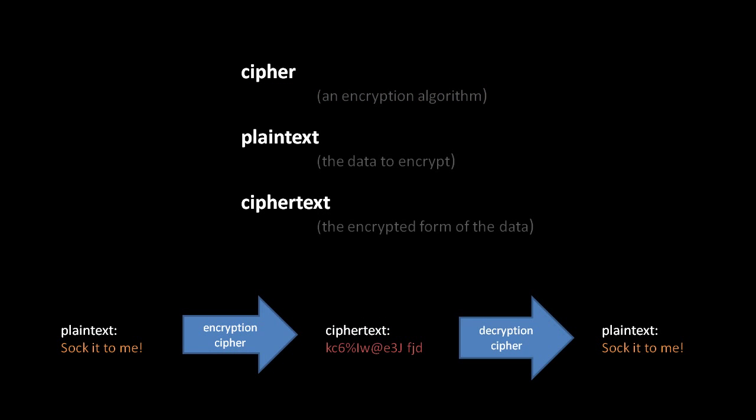First of all, some basic terminology. An encryption algorithm is often called a cipher. The data we encrypt with a cipher is called the plaintext, and then what results from the cipher, the scrambled form of the data, that is called the ciphertext.